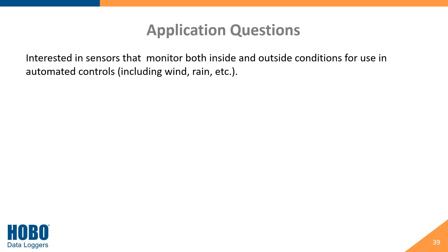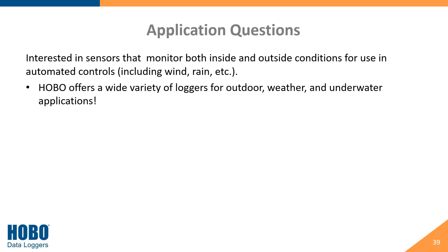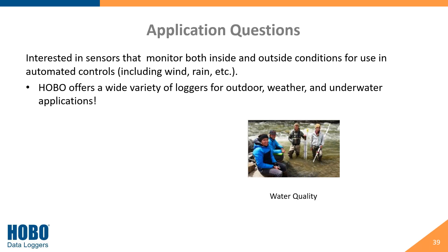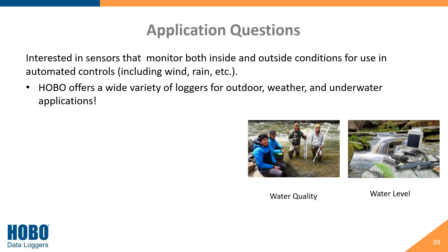Are there sensors that monitor both indoor and outdoor conditions for use in automated controls, including wind and rain? We offer a wide array of data loggers and sensors — standalone devices for monitoring outdoor weather and underwater applications. If you predominantly do building performance monitoring but have a job requiring outdoor monitoring or water quality, we will have a solution for you.